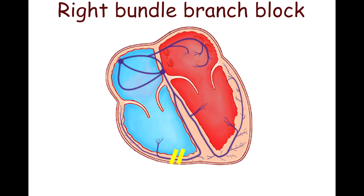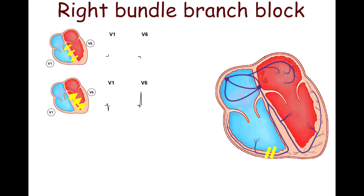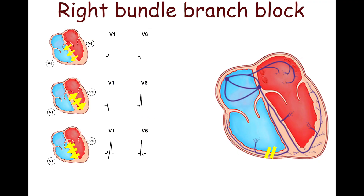In the case of right bundle branch block, ventricular septal depolarization produces the R wave in lead V1 and the Q wave in lead V6. Due to the bundle branch block, the left ventricle undergoes initial depolarization, resulting in the S wave in lead V1 and the R wave in lead V6. Subsequently, the impulse propagates through the myocardium to the right ventricle, producing the R' wave in lead V1 and a wide, slurred S wave in lead V6.